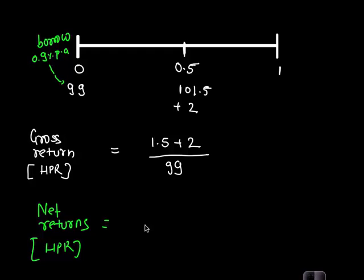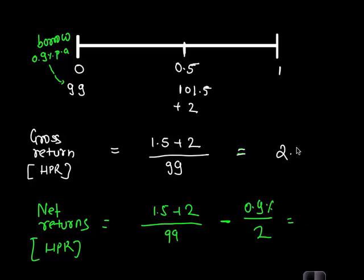Logically, if you borrow 99, your investment amount is 0, you did not invest any of your amount, but the convention is to still have 99 in the denominator. So we will say 1.5 plus 2 minus half of that 0.9 percentage, and then whatever this number comes out to be. How much was the first number? 2.52. So this would be 2.07. In one case we did not capture the borrowing cost, so therefore we get the gross return. In the second scenario we are taking care of the borrowing cost as well, therefore we have the net returns.